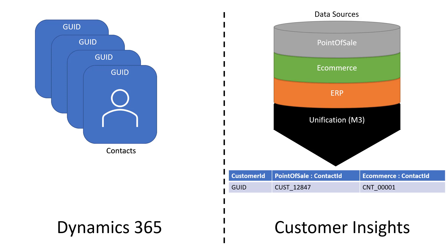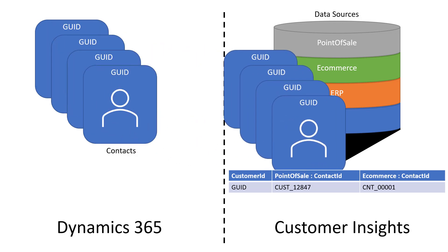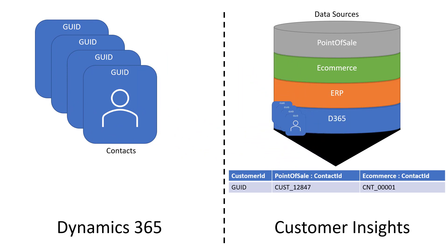Over on the Dynamics side, we have our contacts, and each of those has a unique GUID assigned to them in Dynamics. To get started, we first need to create a new data source on the Customer Insights side — we create a D365 data source, connect and ingest those contacts out of Dynamics. We make our connection, bring those in, and now we have them in our D365 data source.